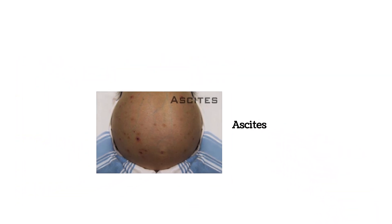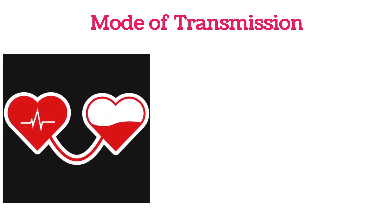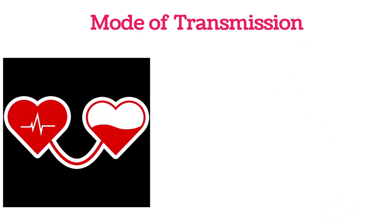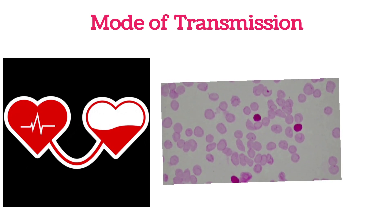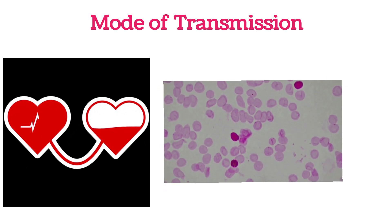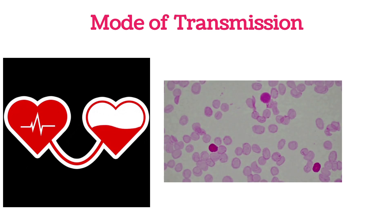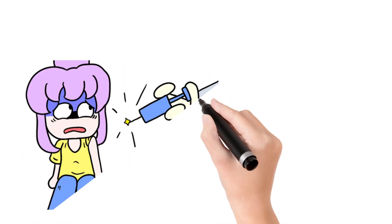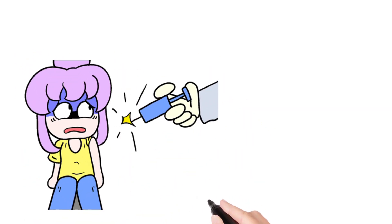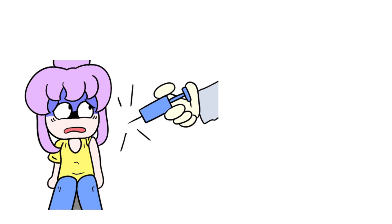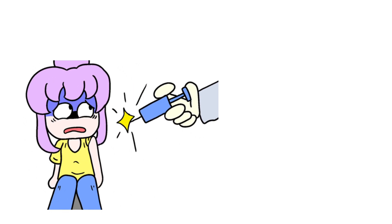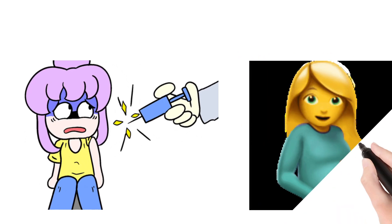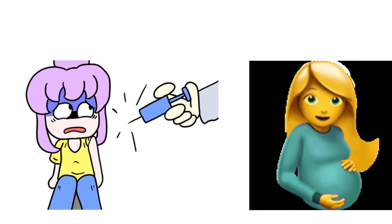Coming to the transmission, generally Hepatitis C is transmitted through blood-to-blood contact. This occurs because of receipt of contaminated blood transfusion, contaminated organ transplantation, or if a person has taken an injection or syringe and the same injection is given to a normal person. Needle stick injuries also cause transmission.